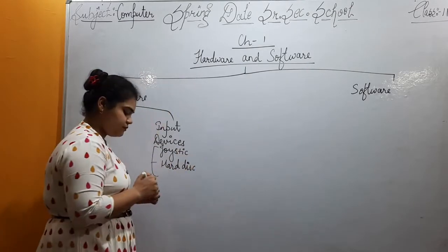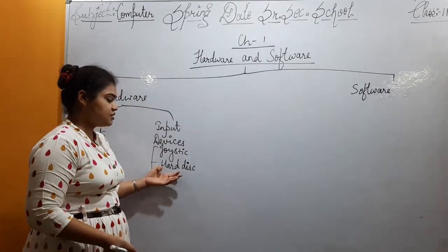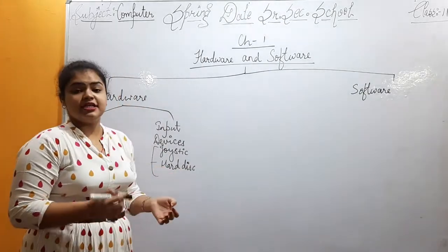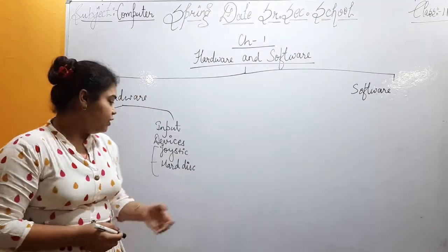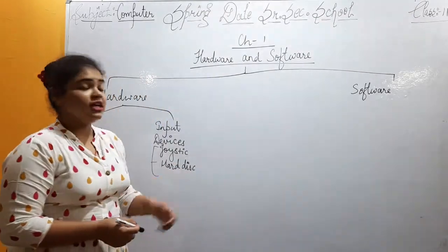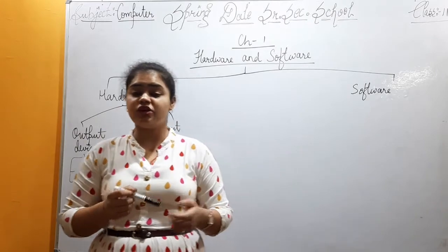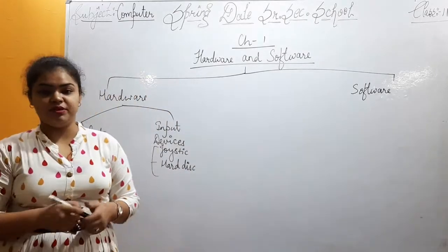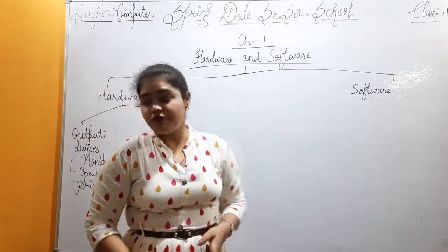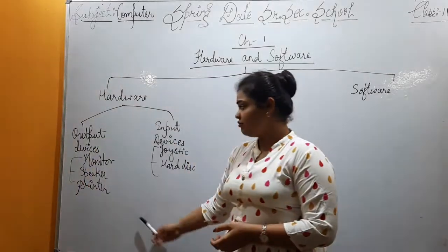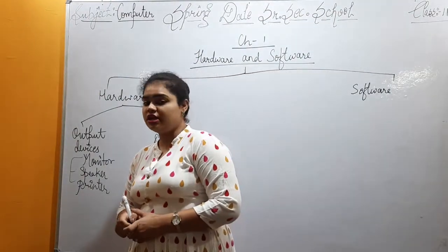Next we have the hard disk. Where is the hard disk? It is inside the computer, placed in the brain of the computer, which we call the CPU.